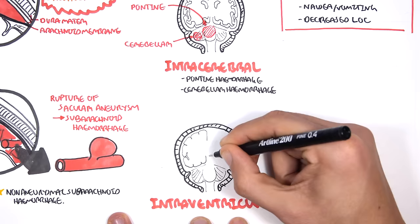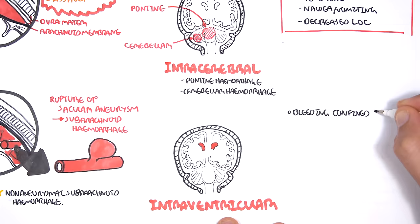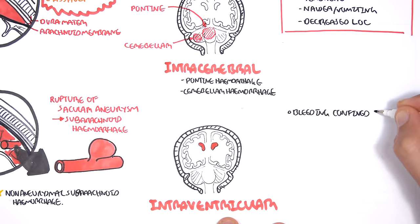The other type of intra-axial hemorrhage is intraventricular hemorrhage — bleeding confined to the ventricle system of the brain. It most often occurs as a secondary phenomenon when intracerebral hemorrhage ruptures into the ventricles, or when subarachnoid hemorrhage extends into the ventricles. Essentially, intraventricular hemorrhage is secondary to another hemorrhage such as subarachnoid or intracerebral hemorrhage.